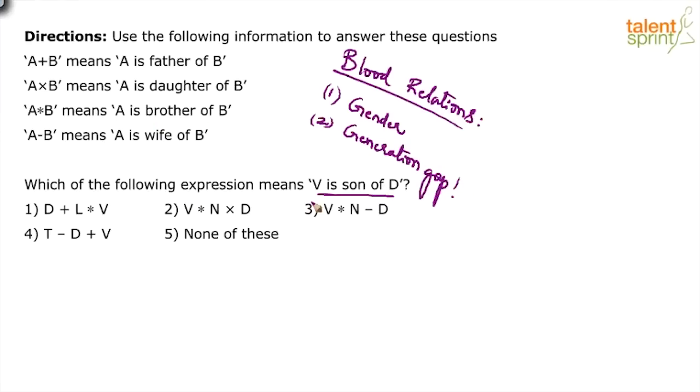So that can be tried here, but just go with what we discussed a few seconds ago. See, V is the son of D. Look at option 1. V is at the end. V is the son of D means what? V has to be a male person.